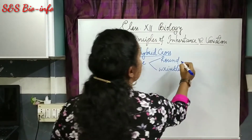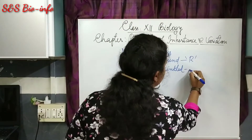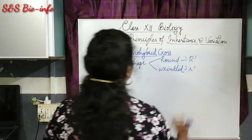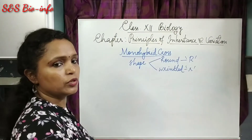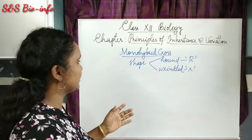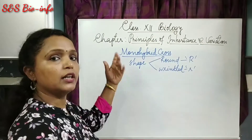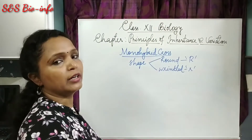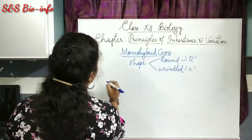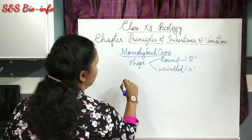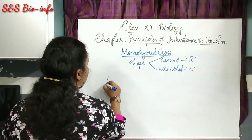Round is the dominant trait and wrinkled is the recessive trait. In a monohybrid cross, Mendel conducted cross-pollination of two parents with one pair of contrasting traits. So let's do that — first, cross-pollination of the parents.